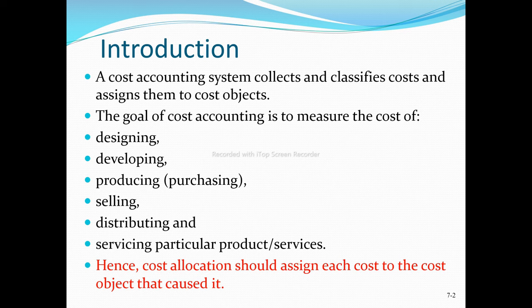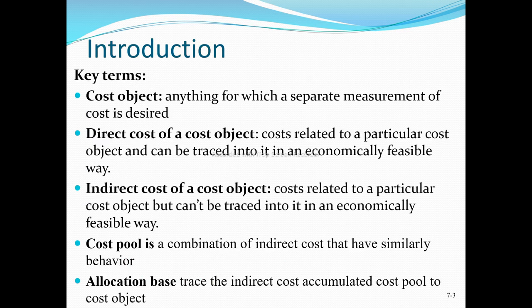The major goal of cost accounting is measuring costs across different departments, and hence cost allocation should assign each cost to its appropriate cost object. A cost object is anything for which a separate measurement of cost is desired — it is the best owner of the cost.